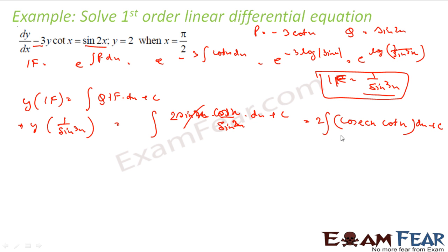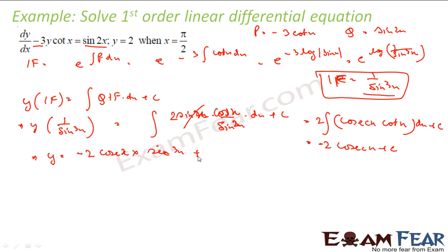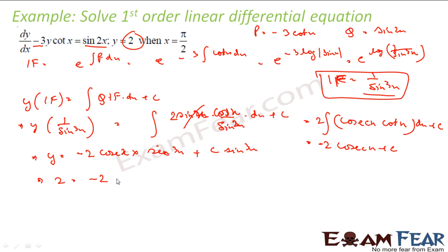Integrating gives minus 2/sin(x) plus c, so the general solution is y/sin³x equals minus 2/sin(x) plus c, or y equals minus 2·cos(x)·sin²x plus c·sin³x. Now it says y equals 2 at x equals π/2. Substituting: 2 equals minus 2·cos(π/2)·sin²(π/2) plus c·sin³(π/2). Since cos(π/2) equals 0 and sin(π/2) equals 1, we get 2 equals 0 plus c, so c equals... we get 2 plus 2, giving c equals 4.